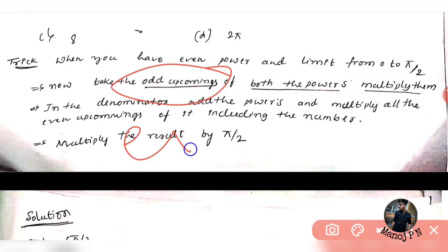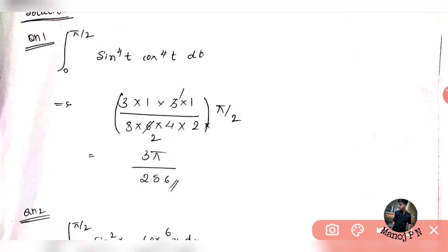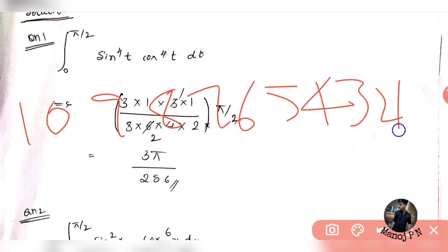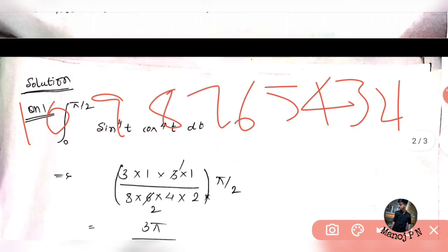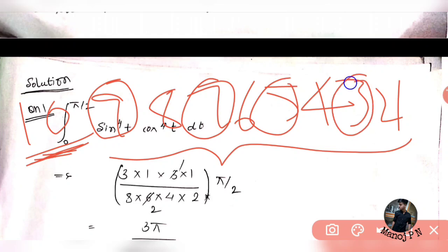The first one is odd upcomings, and then one is even upcomings. So what do you mean by odd upcomings and even upcomings? Say I have a series of numbers: 10, 9, 8, 7, 6, 5, 4, 3, 2, 1. I am going to take a series. For example, I am going to consider 10 to be my number. If I am asked to find out the odd upcomings for 10, I am going to consider those odd numbers before it — all these are odd upcomings of the number 10.